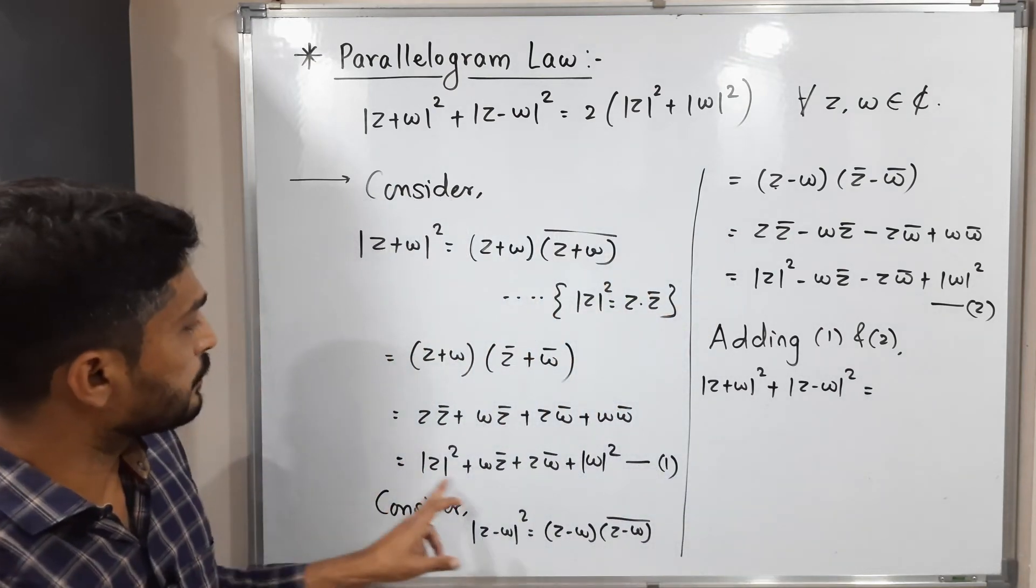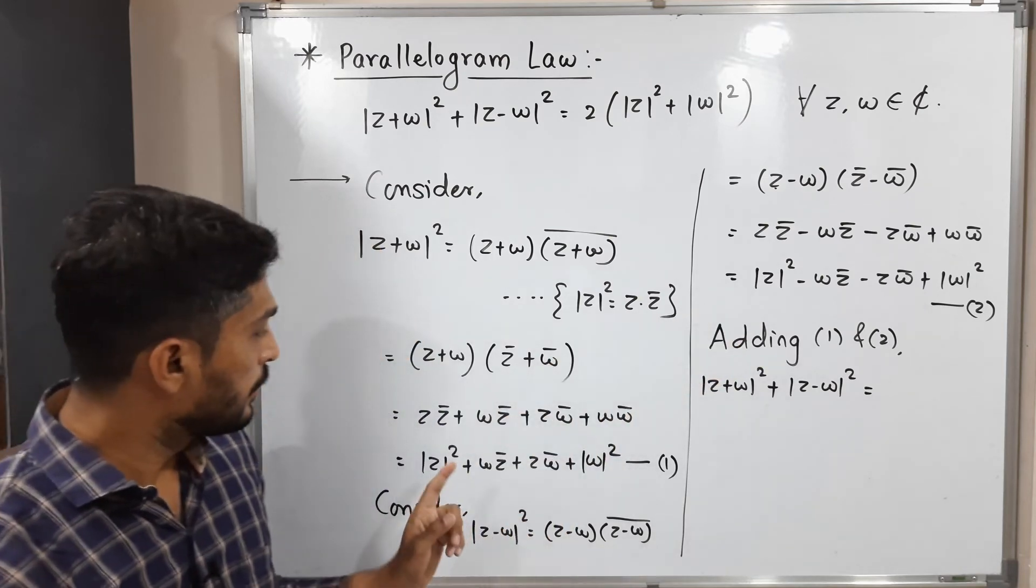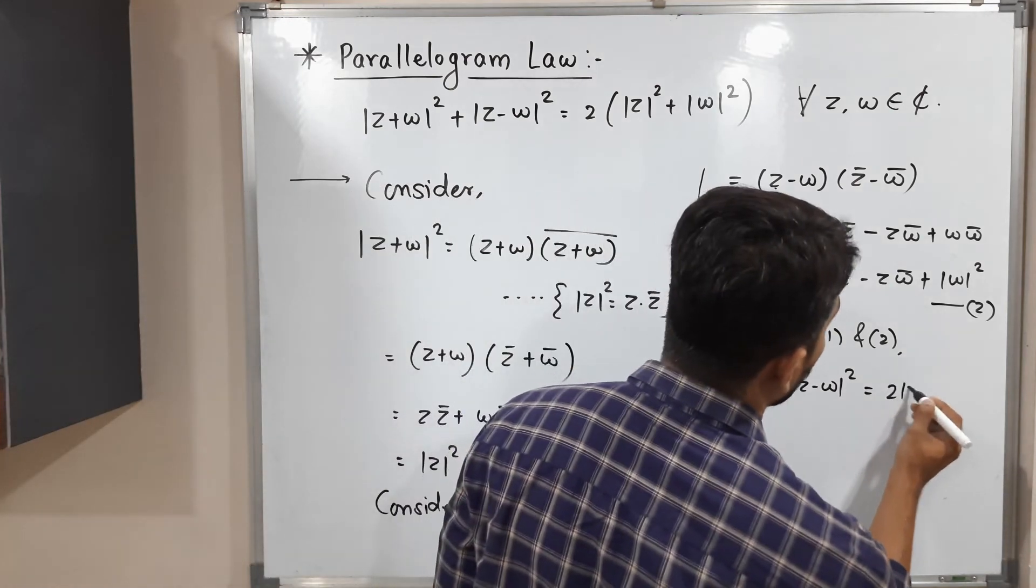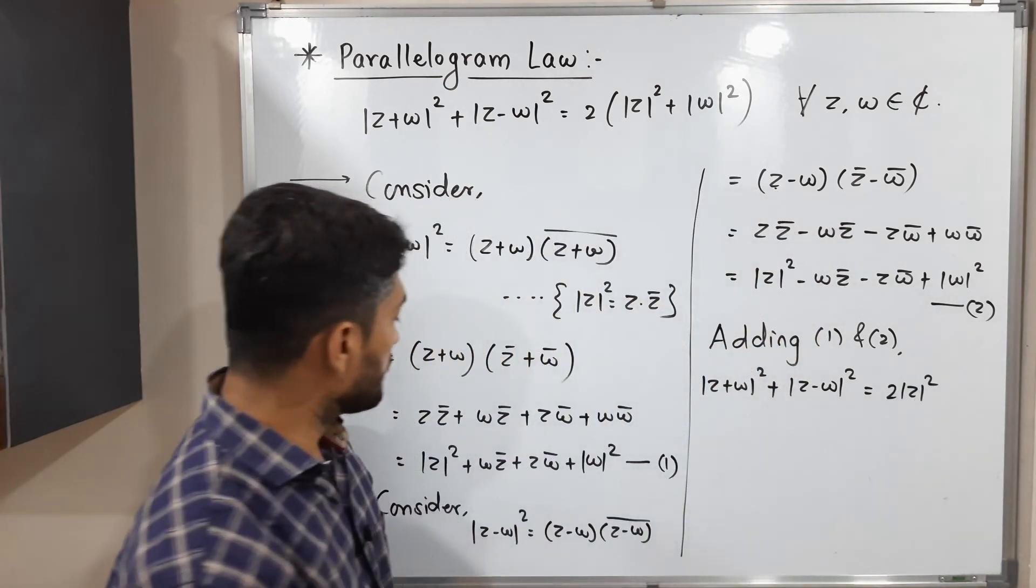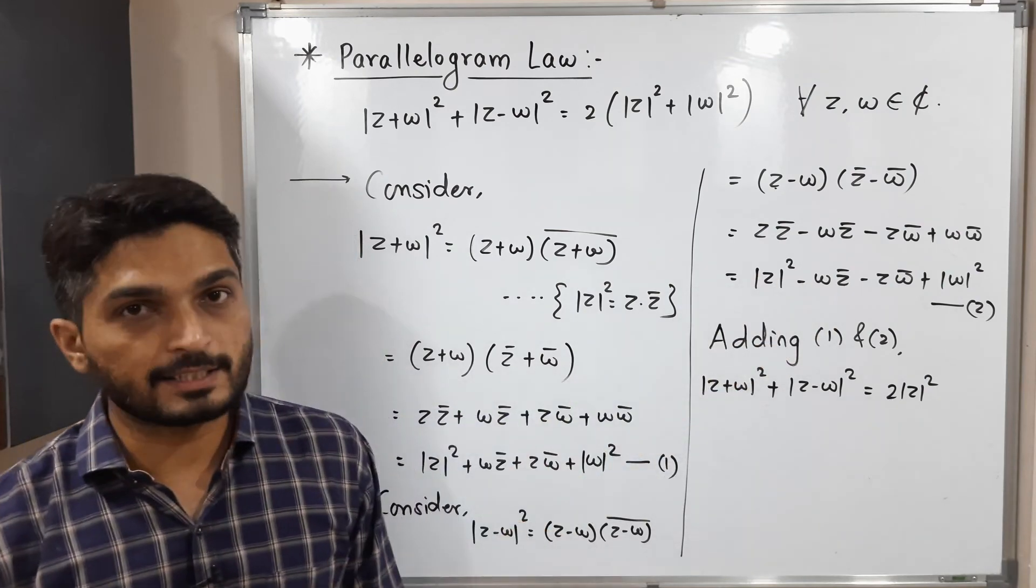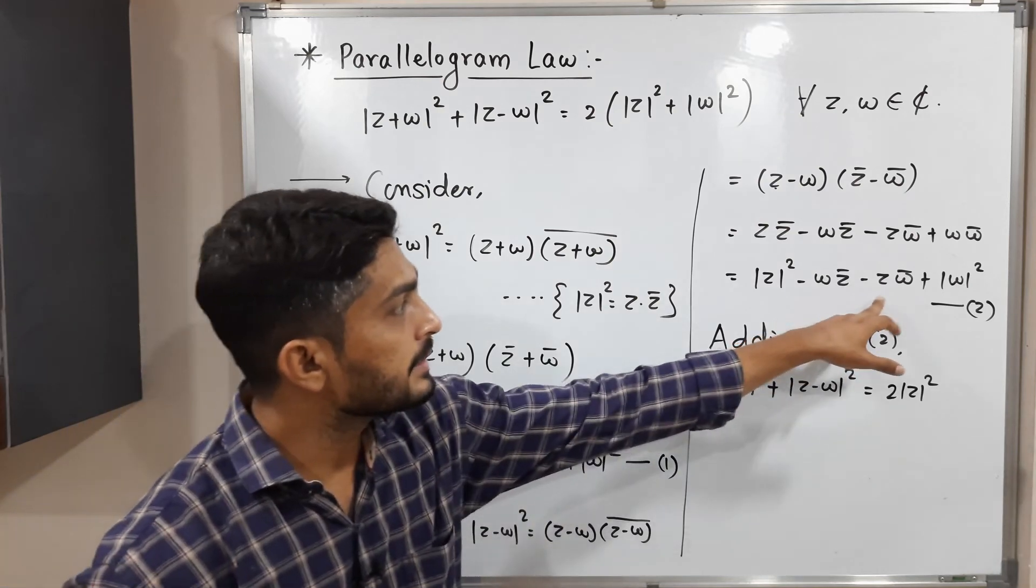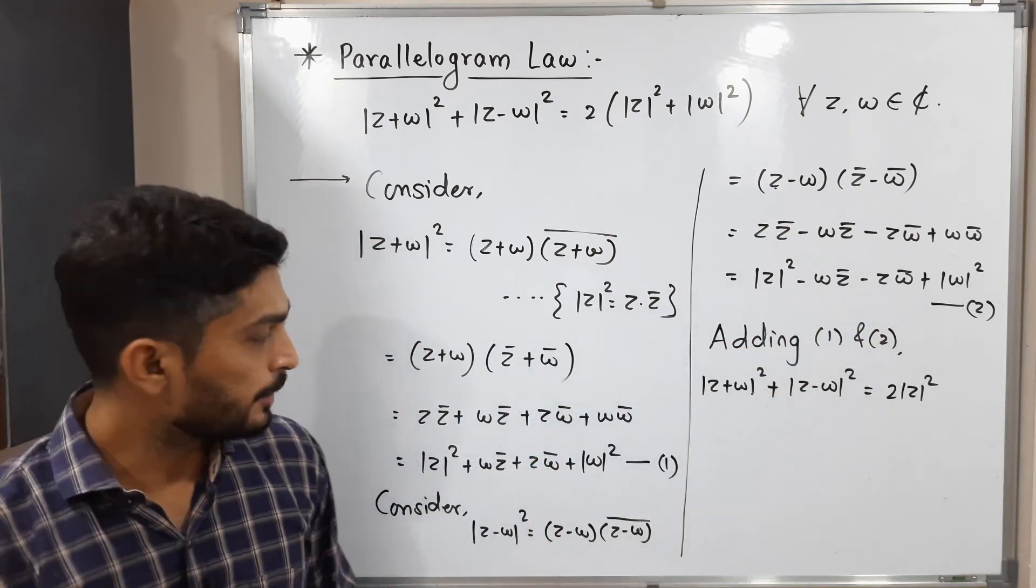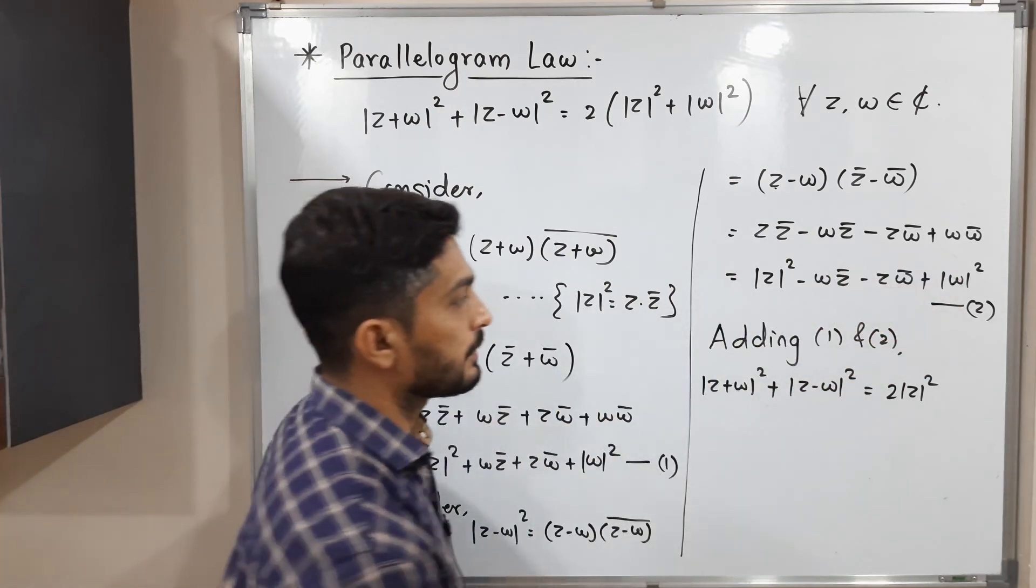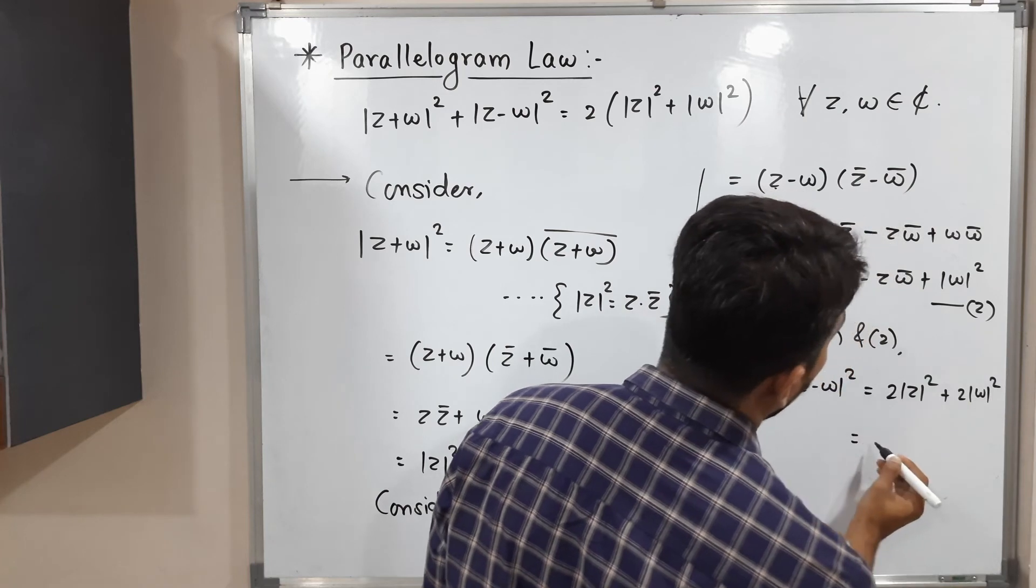So this is value of the first mod and this is value of the second mod. So mod z square plus mod z square, we will have two mod z square. This plus w z bar minus w z bar will get cancelled to each other. z w bar minus z w bar will get cancelled to each other. Mod w square plus mod w square, that means we will have plus two mod w square. We can take two common. So we will have mod z square plus mod w square.